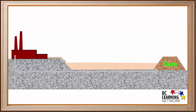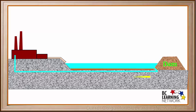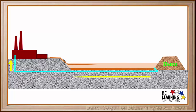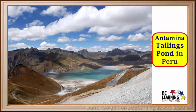The mixture of water and particles called tailings is allowed to settle. The particles slowly settle to the bottom, and the water that is left over is recycled back to the plant and reused for the extraction process. This whole process goes on continuously until the pond is full of tailings. Here is a very large tailings pond in Peru.